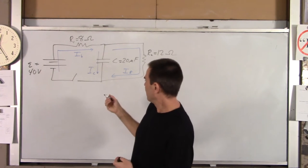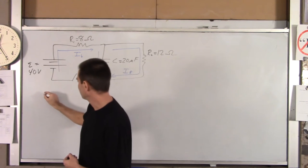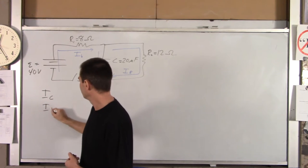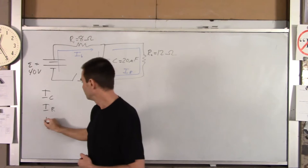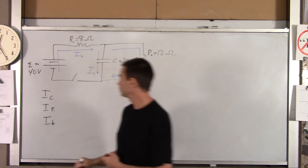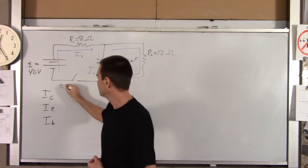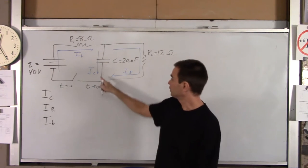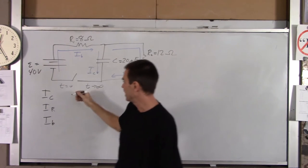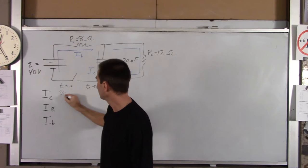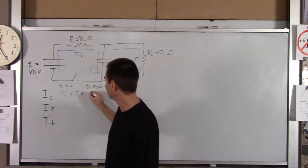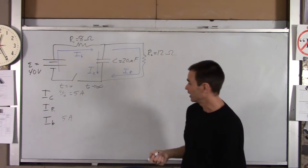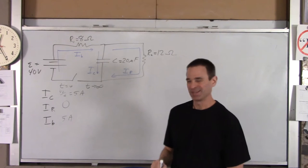So when you first close the switch, the circuit is just a simple RC circuit — the capacitor behaving like a wire. You have an 8-ohm resistor in line with the 40-volt battery, so current is going to be 5 amps. We'll look at I sub C (the current through the capacitor), I sub R (through the resistor), and I sub B (through the battery). At time zero: I_C and I_B are both 40/8 = 5 amps, and I_R is zero.